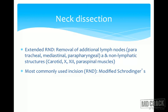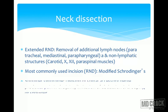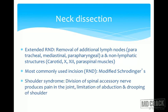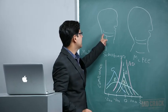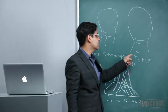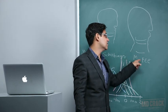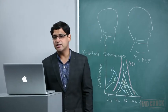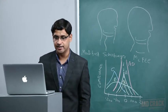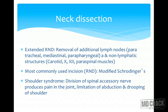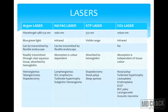Various incisions are used in neck dissection. The most common is the modified Schobinger incision. Another incision used in the irradiated neck is the MacFee incision, which has two parallel incisions — this can be asked as an MCQ. Shoulder syndrome results from division of the spinal accessory nerve, producing pain in the joint, limitation of abduction, and drooping of the shoulder — seen when the spinal accessory nerve is injured during neck dissection.